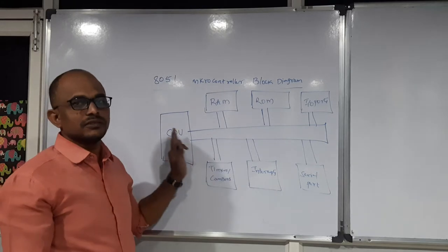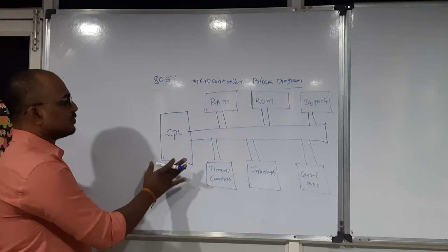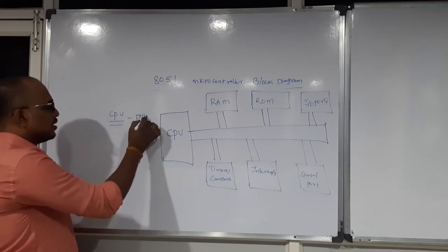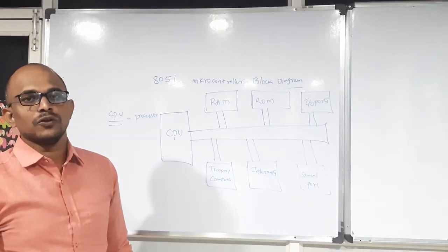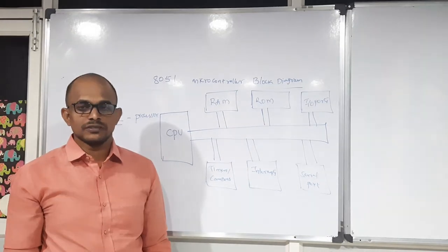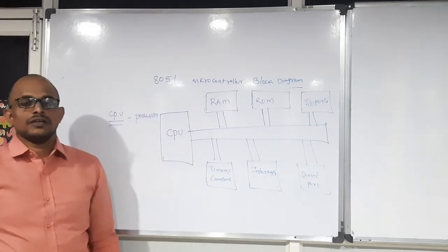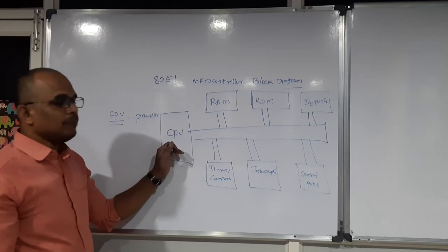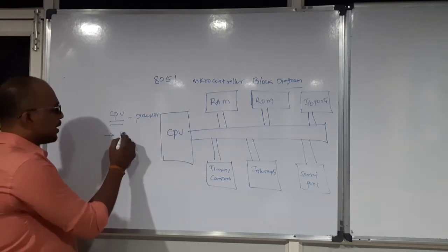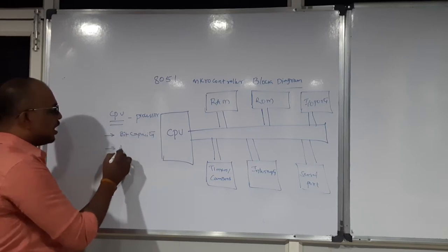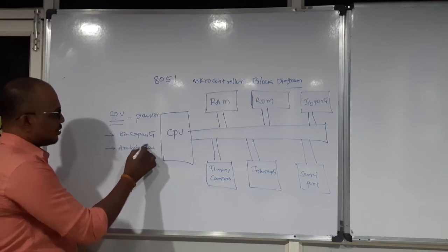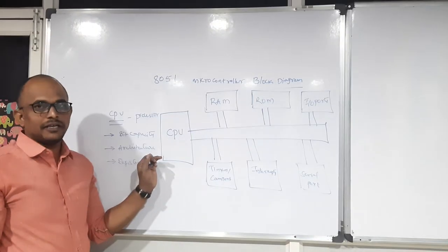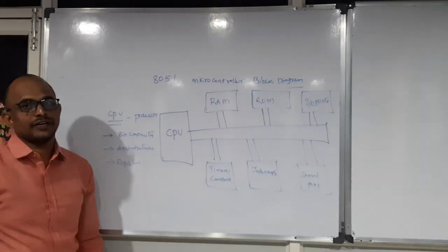This entire thing is processed by your CPU unit. When trying to know the importance of each block, you need to focus on the processor first — the processor means your central processing unit. Every microcontroller is integrated with a processor, two memories (RAM and ROM), I/O ports, and some extended features. From the processor, there are three important points to focus on: one is bit capacity, the second is architecture, and the third is registers. Every processor has its own individual bit capacity, individual architecture, and supports some registers to store data temporarily.